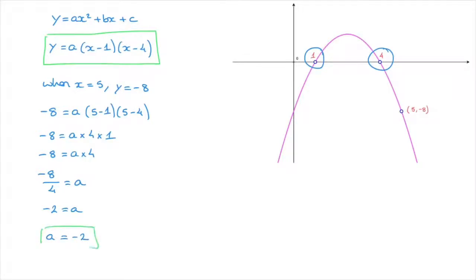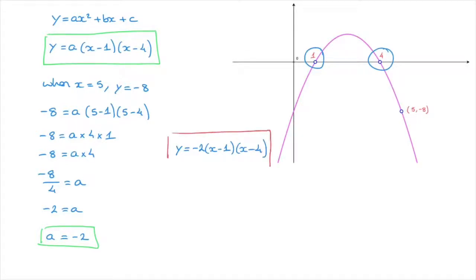We now know the value of the coefficient a. Combining this with the factored equation, we can state that this parabola's equation can be written y equals negative two times (x minus one) times (x minus four). That's the root factored form of this parabola's equation. In an exam or a quiz, we may be asked to find this equation in the form ax squared plus bx plus c. If so, all we need to do is open up the parentheses in the root factored form.